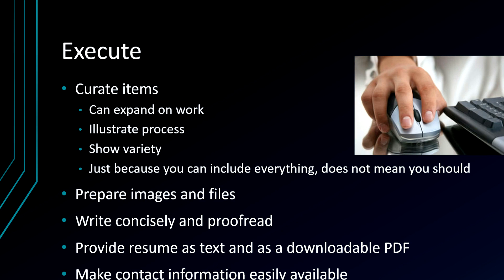Now execute — you have to make the thing. Curate your items: look at what you have in your portfolio already. Is there anything you'd like to add, something you were sad you left out? Is there something you could do to illustrate your process — show steps, talk about how you made something, why you made it, give it a name and a description? Show some variety, in the same way you showed variety in your portfolio. And please remember to curate — just because you can include everything does not mean you should. You're still choosing. Don't put everything you've ever done up there. You want it to still be your best work, but you can expand upon it.